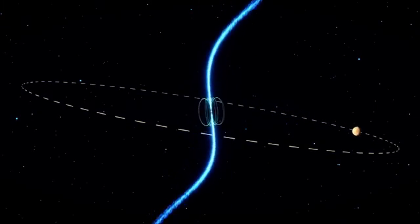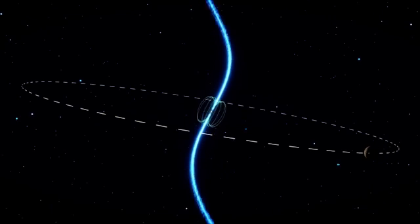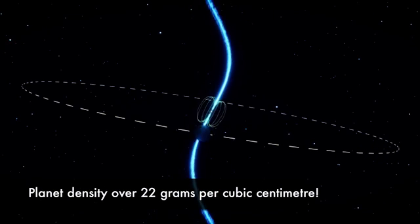The motion of the pulsar told us that the companion only weighed about as much as Jupiter and is incredibly dense, similar to that of platinum.